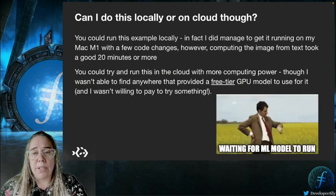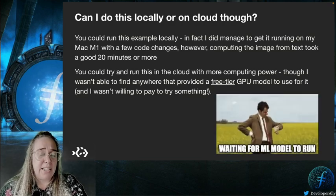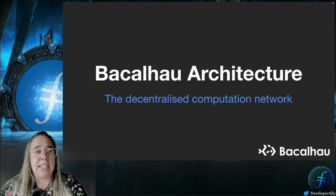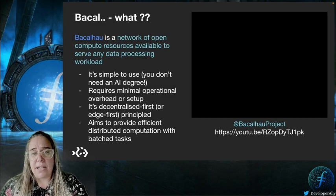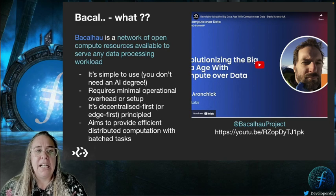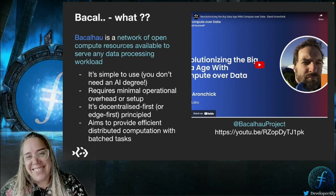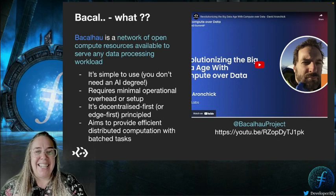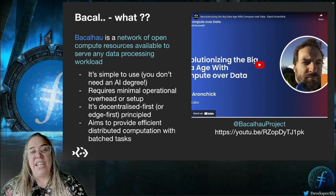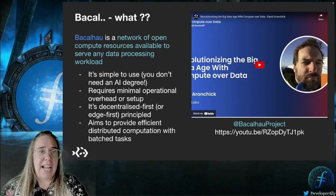Making data processing and computation open and available to everyone, and speeding up processing times, is possible in Bacalhau — firstly by using batch processing across multiple nodes, and secondly by putting the processing nodes where the data lives. Bacalhau is a decentralized computation network which provides a platform for public, transparent and optionally verifiable computation. It was originally conceived to bring useful compute resources to data stored on IPFS and the Filecoin network. If you want to hear more, I recommend this video by lead David Aronchik on the Bacalhau project YouTube.